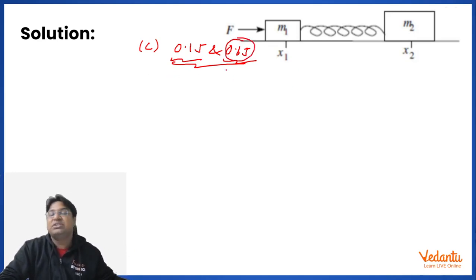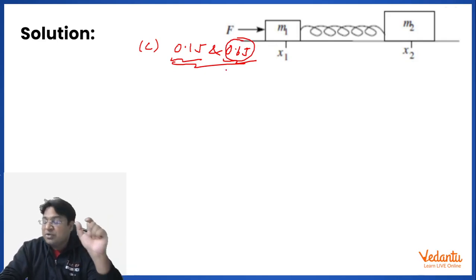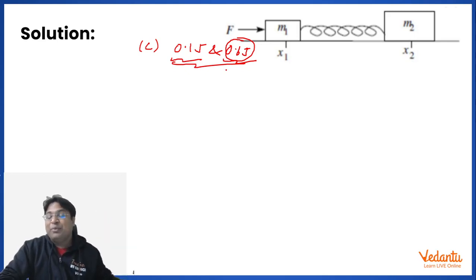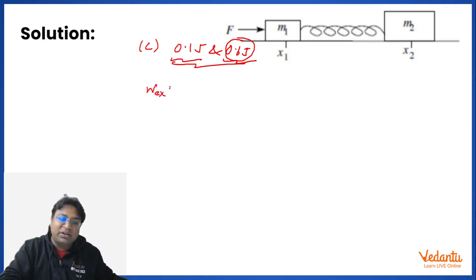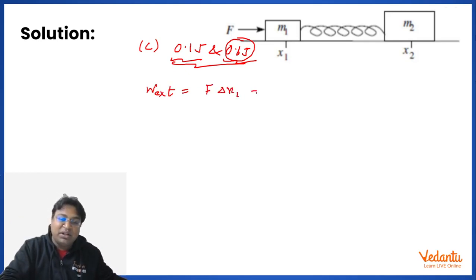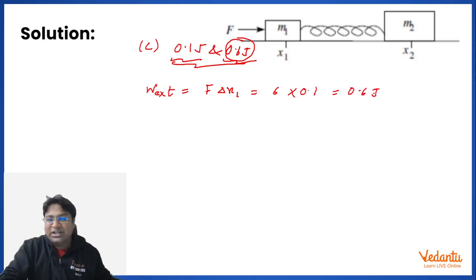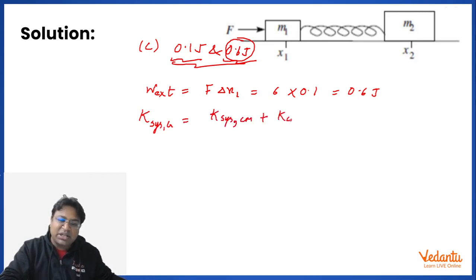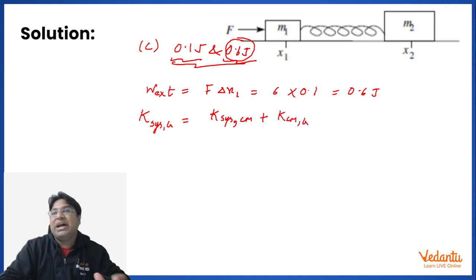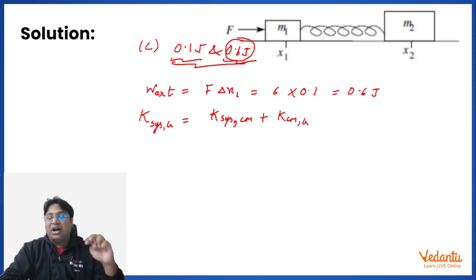To calculate the total kinetic energy of the blocks in the ground frame plus energy stored in the spring: all this energy comes from the external agent, so the work done by the external force gives total energy stored — that is F × ΔX1 = 6 × 0.1 = 0.6 J. To get the other answer, we use the kinetic energy of a two-particle system.